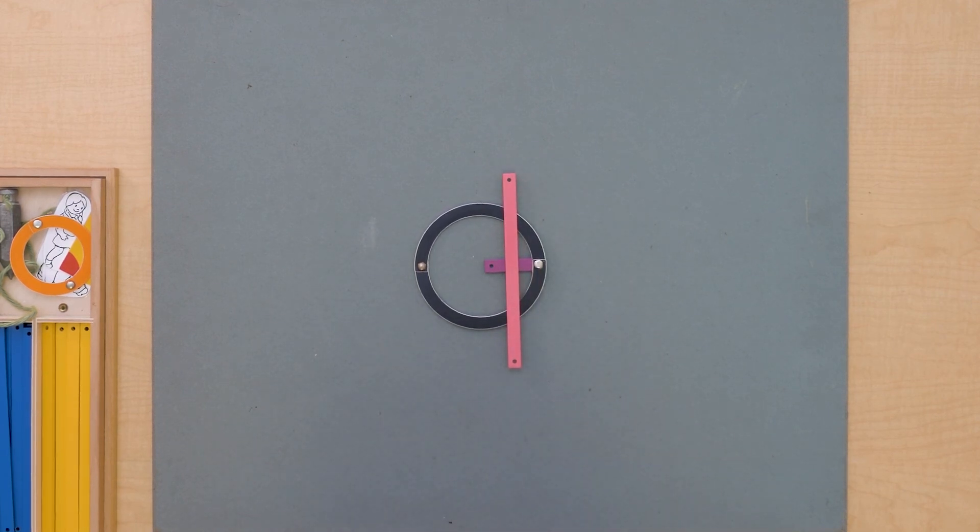What can we say now when this line is secant? What about its distance to the center? It's less than the length of the radius, isn't it?